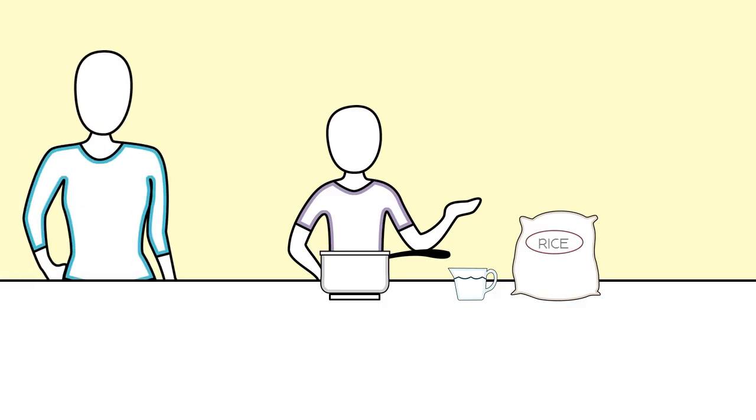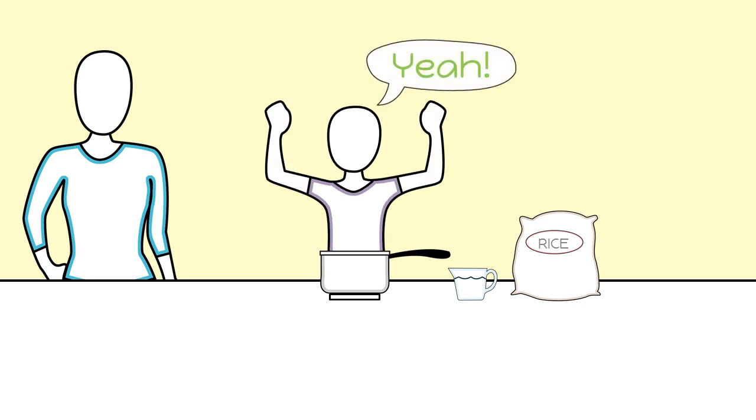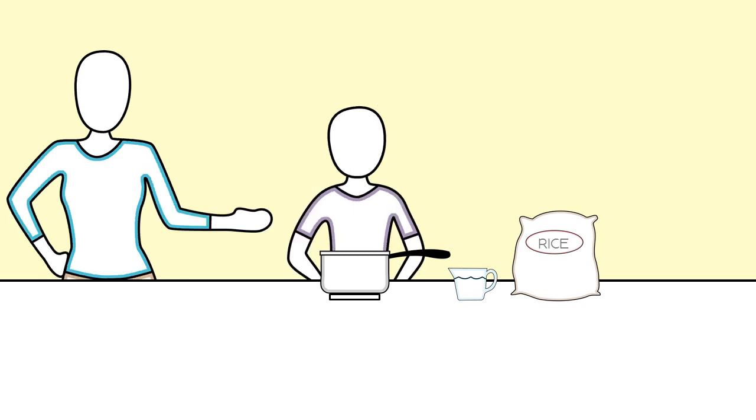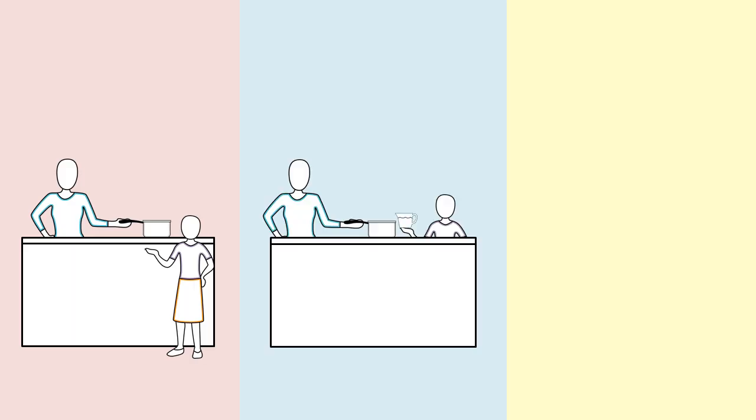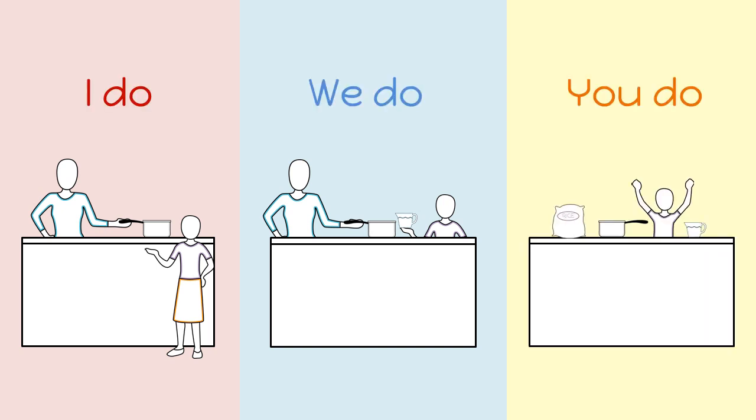Finally, my mom said I had been doing such a good job that I could make the rice all by myself. My mom pointed out to me how I learned it so well. She explained, first I did it and you watched. Then we did it together, and now you can do it on your own. I do, we do, you do.